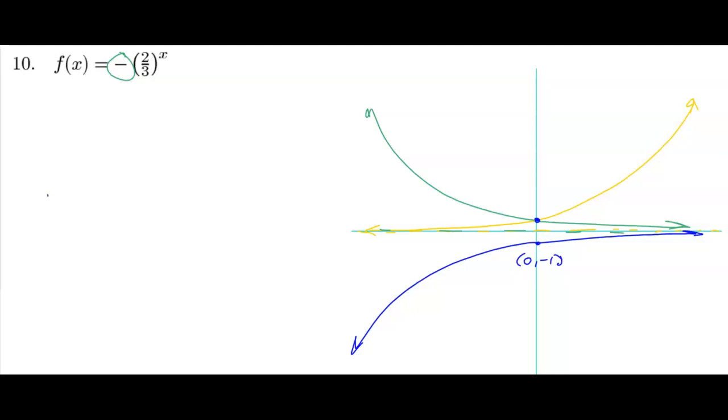So the domain, all real numbers. The range goes down to negative infinity, comes up, but does not equal 0. So the range is any negative number.